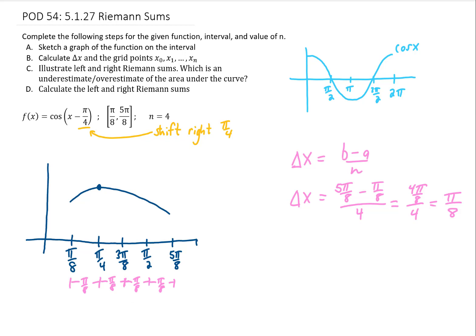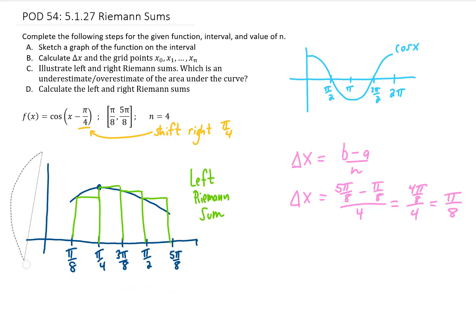For a left Riemann sum, we take the leftmost end point for each of these four intervals, and that leftmost end point is going to give us the height of the rectangle within our Riemann sum. So our left Riemann sum is going to look something like this. And so things don't get too messy, I'm going to make a little bit of room here, and I'll show you what a right Riemann sum is going to look like as well.